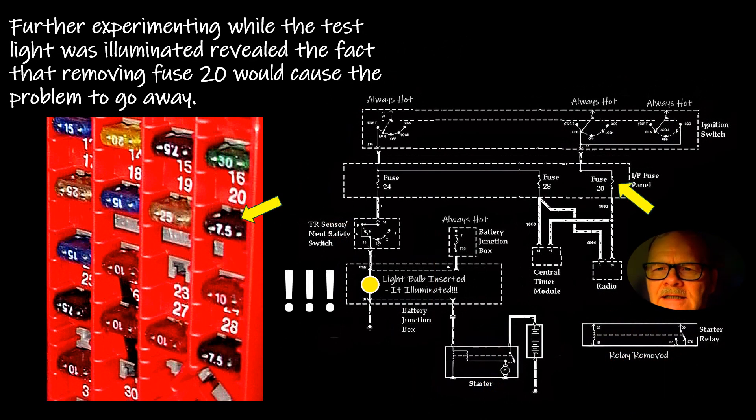I experimented with the test light that was illuminated at that coil, and I found out that if I removed fuse 20 then the light would go out. So I'm saying okay, the origin of this power is coming from the run part of this element of this gang switch. It's not supposed to, but it does.